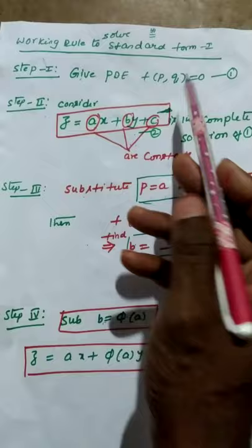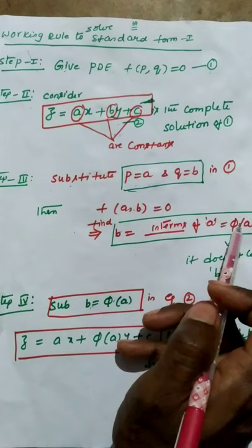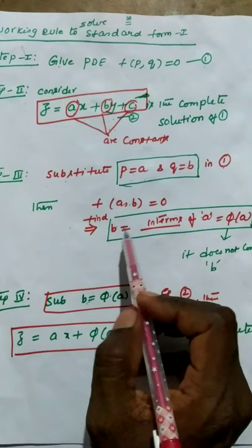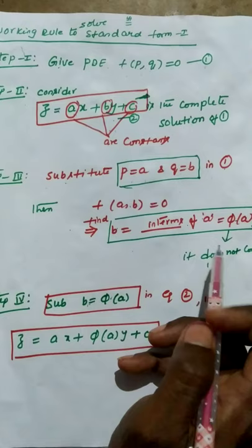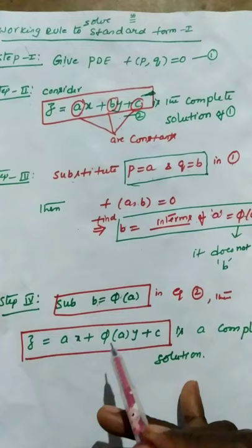Then the given equation changes to f(a, b) = 0. From this equation, we find the value of b in terms of a — that means phi of a. While finding the value of b in terms of a, the function phi(a) does not contain b again. After finding the value of b in step 4, we substitute b = phi(a) in equation 2, which gives the general solution.